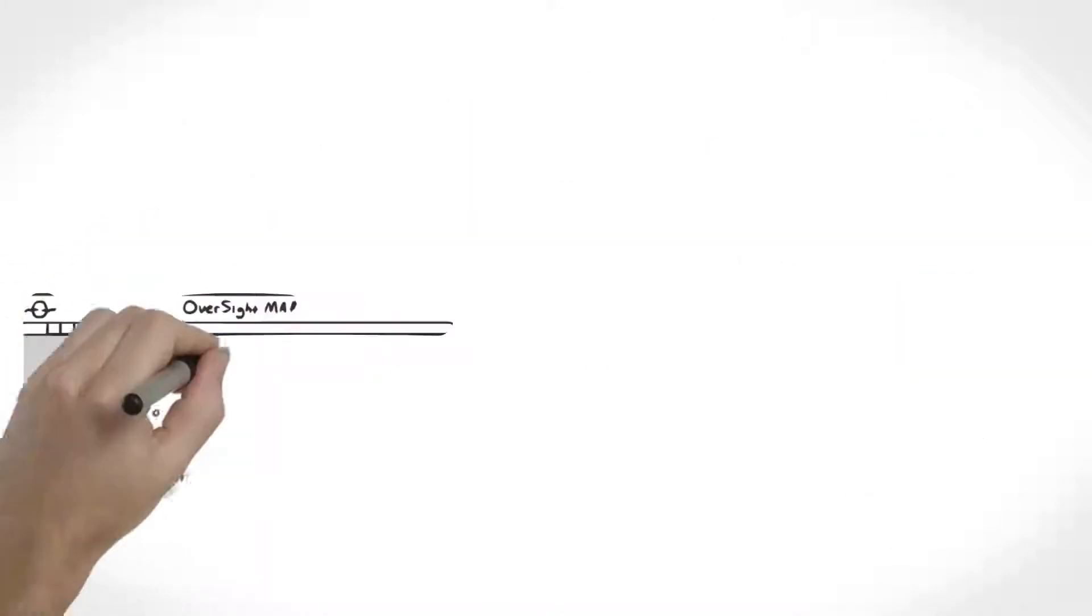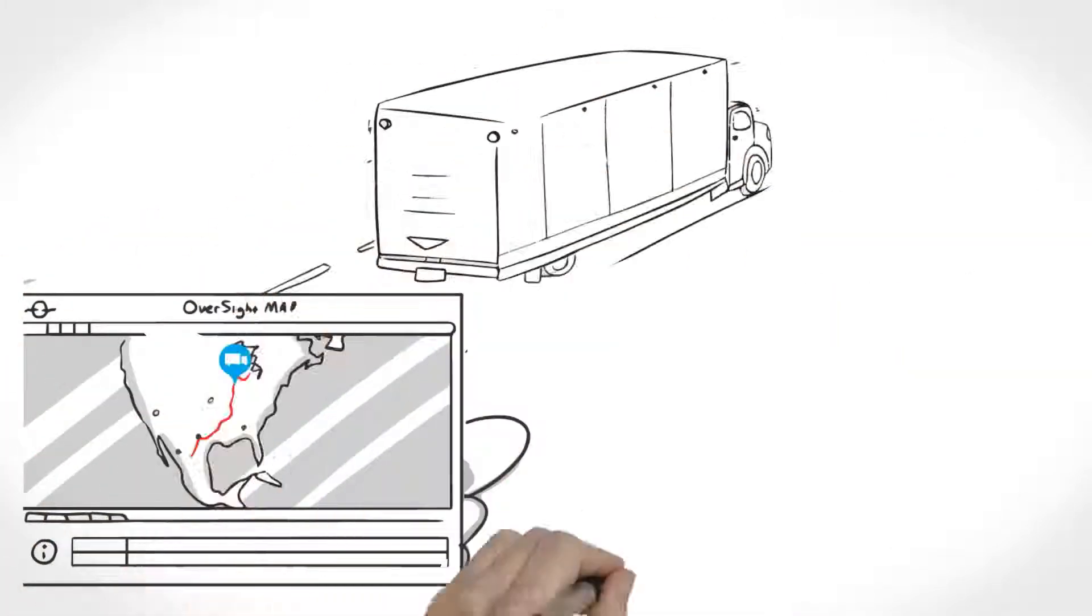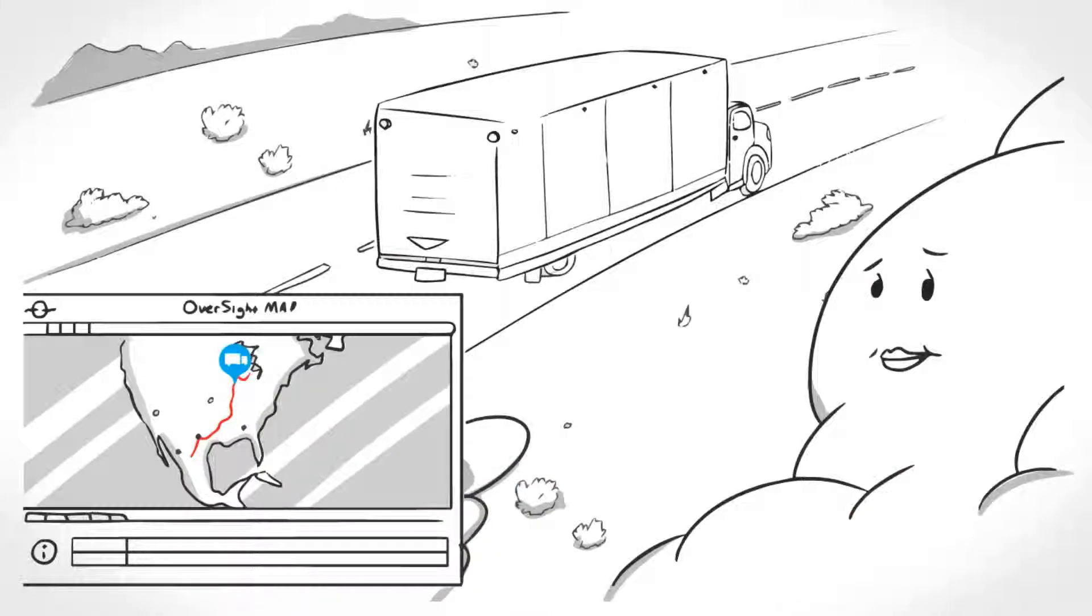The cloud stores our data and displays it on the Locus Tracks worldwide oversight page. Once your shipment arrives at the destination,